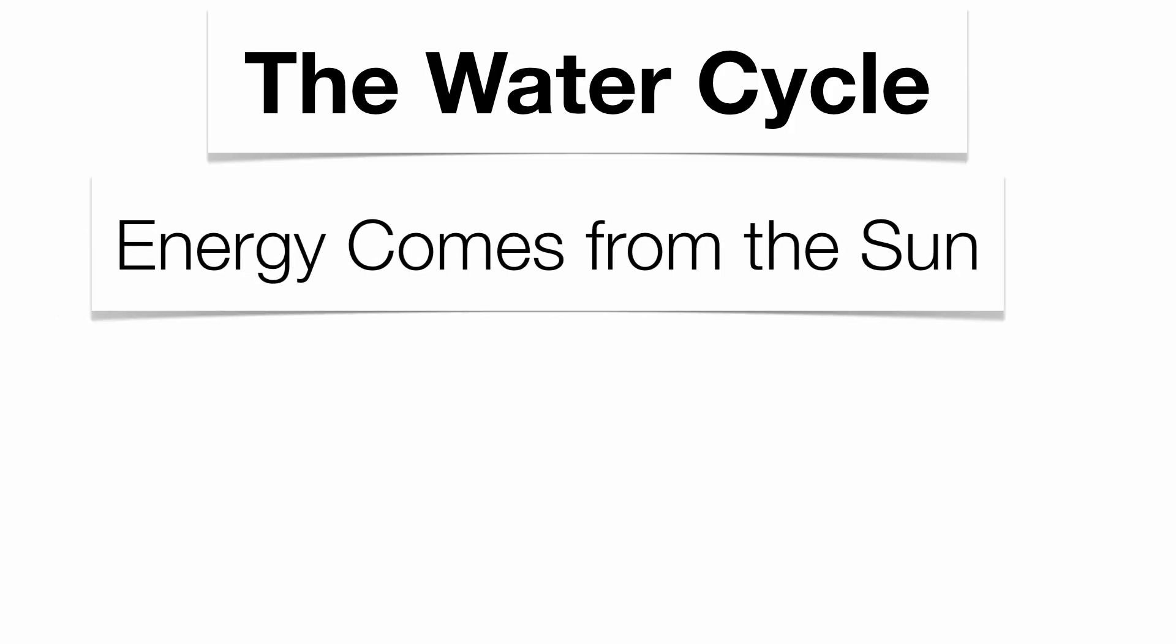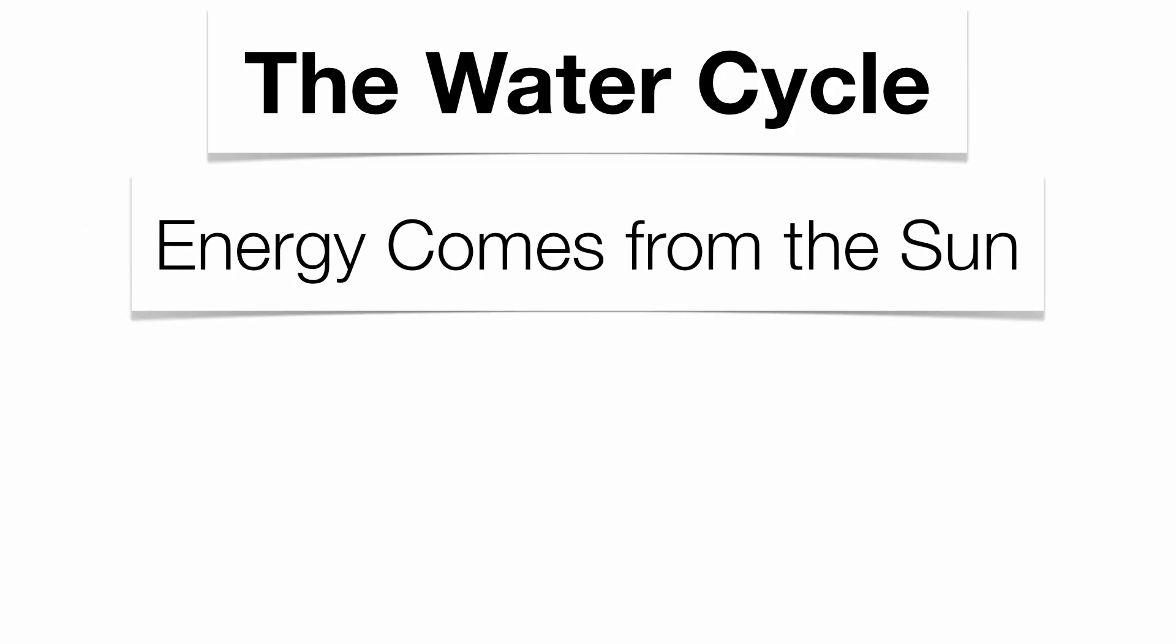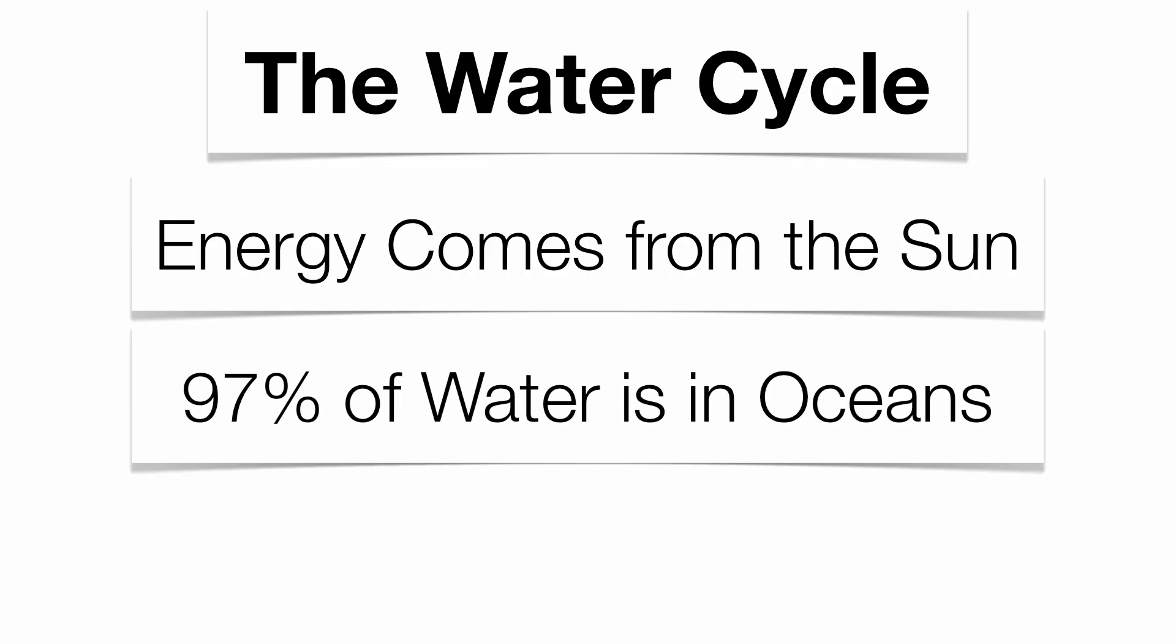The energy from the water cycle basically comes from the sun. The sun is going to heat up the majority of the water on the planet, which we can find in our oceans, which is going to kick off a process called evaporation.